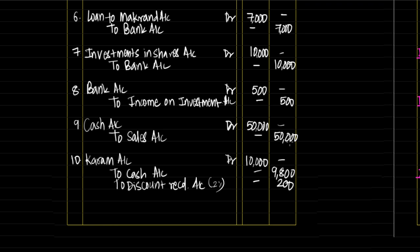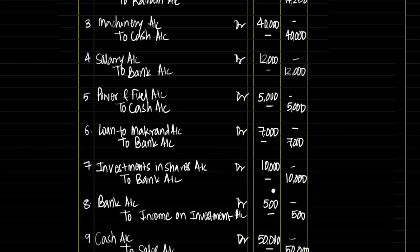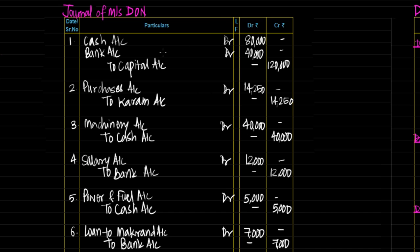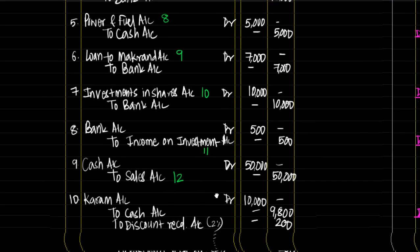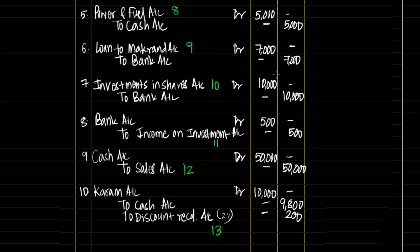Now it's time to do ledger posting of these transactions. We would open an account in ledger for each and every account reflected in the journal. Let's mark how many accounts to be opened in ledger: cash (1st), bank (2nd), capital (3rd), purchases (4th), Karam (5th), machinery (6th), salary (7th), power and fuel (8th), loan to Makran (9th), investments in shares (10th), income on investment (11th), sales (12th), and discount received (13th) — 13 accounts to open.